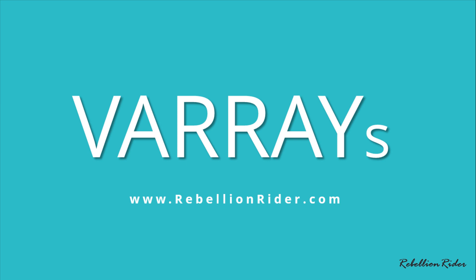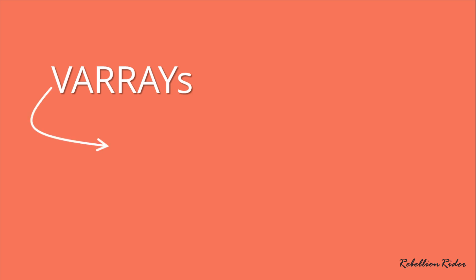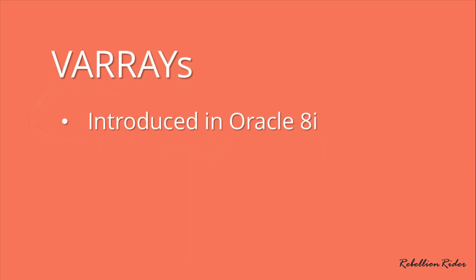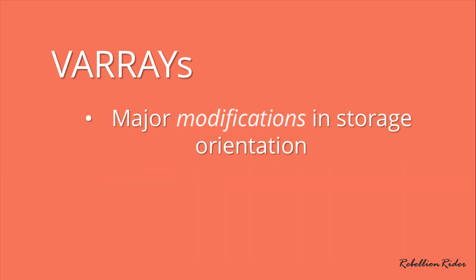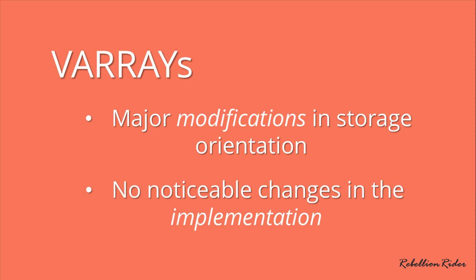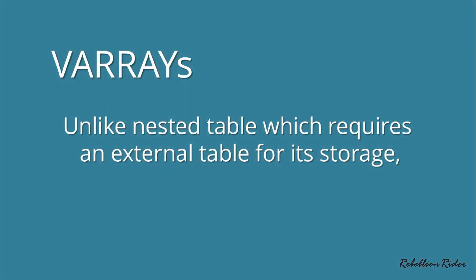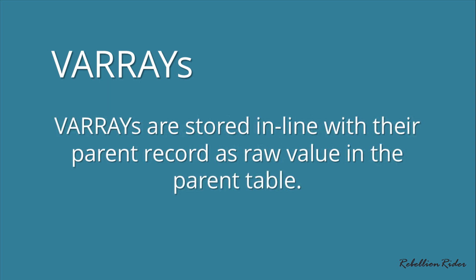VARRAYS, which is an acronym for variable sized arrays, were introduced in Oracle 8i back in 1998 as a modified format of nested table. The major modification can be seen in storage orientation. There are no noticeable changes in the implementation, but their storage orientation is completely different from nested tables. Unlike nested tables which require an external table for storage, VARRAYS are stored in line with their parent record as a row value in the parent table. This means no more need for the STORE AS clause — no unnecessary IOs and increased performance.